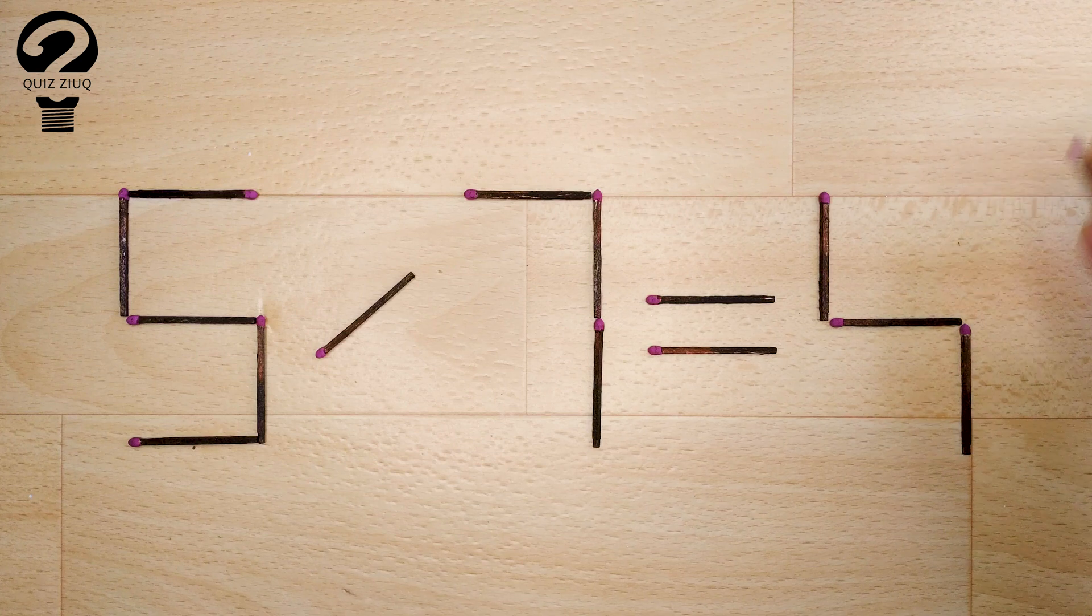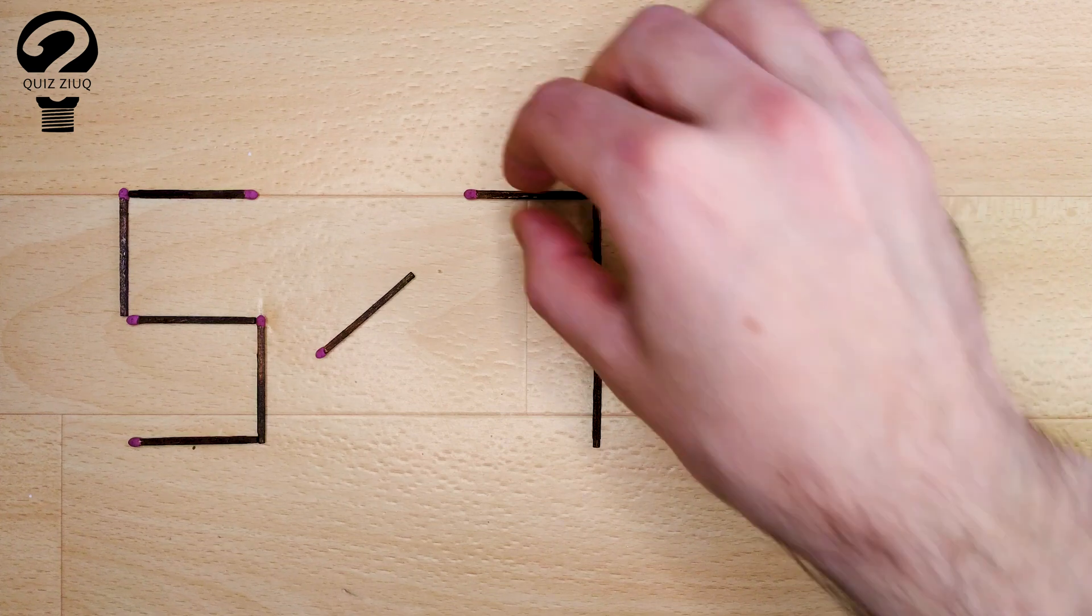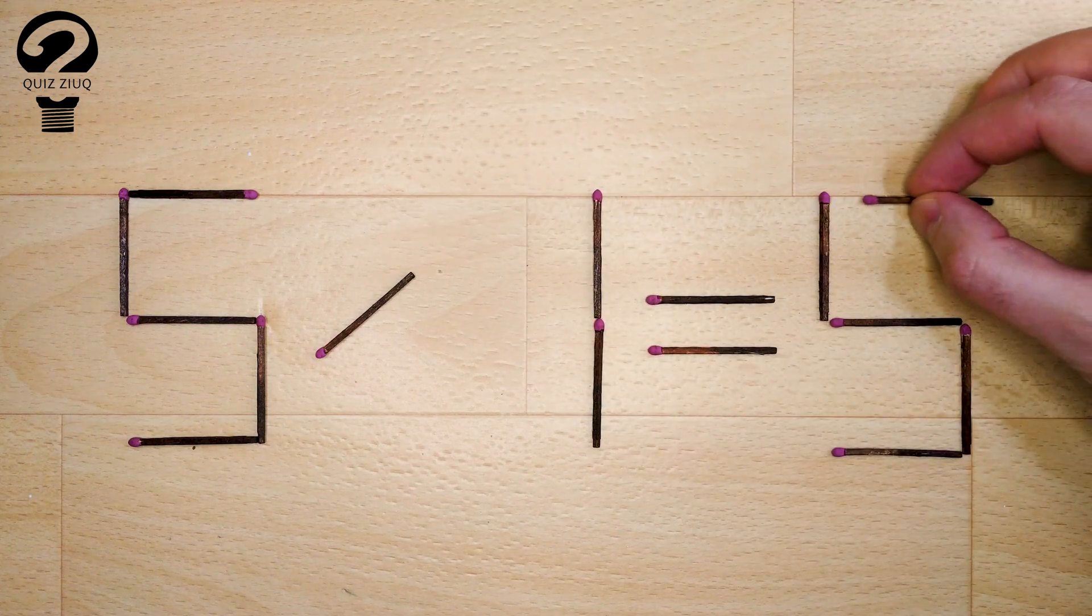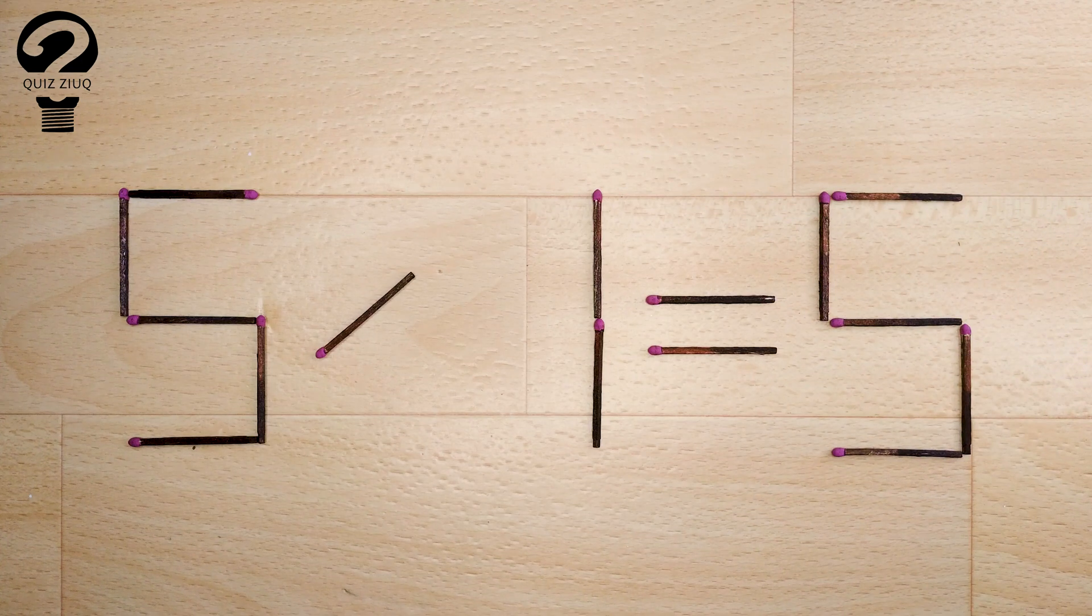And now, when we check: 5 divided by 1 equals 5. 5 equals 5. Our equation is correct. The task is completed. The puzzle is solved.